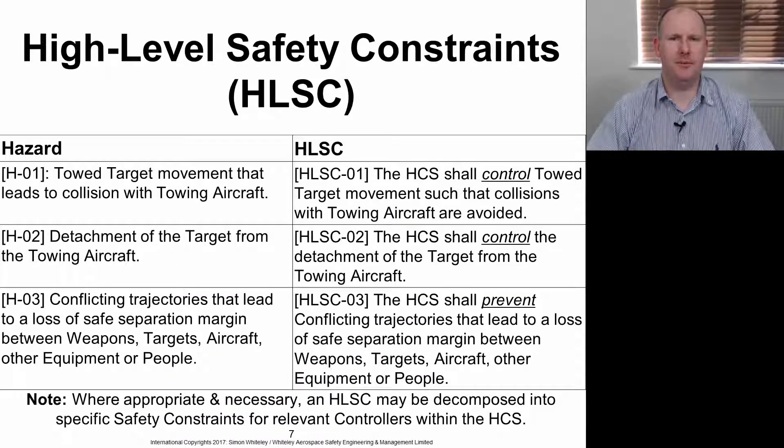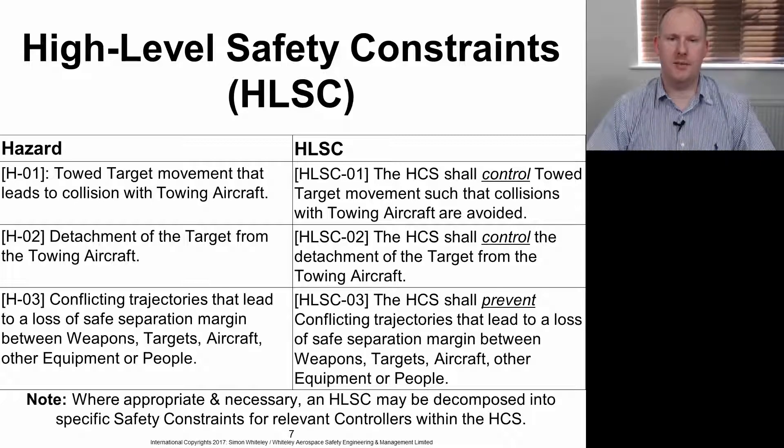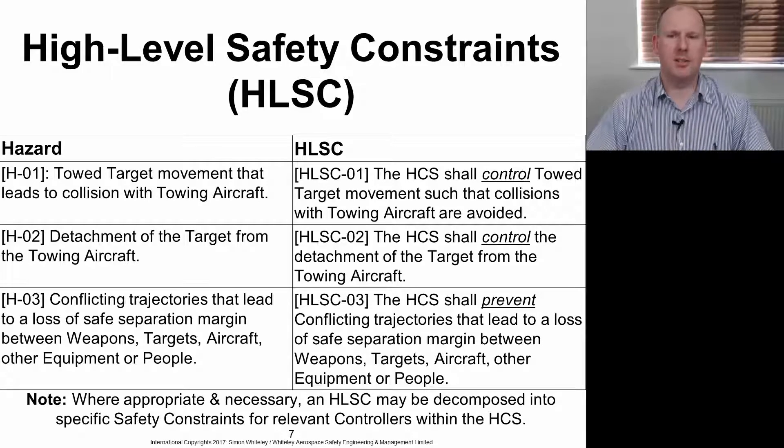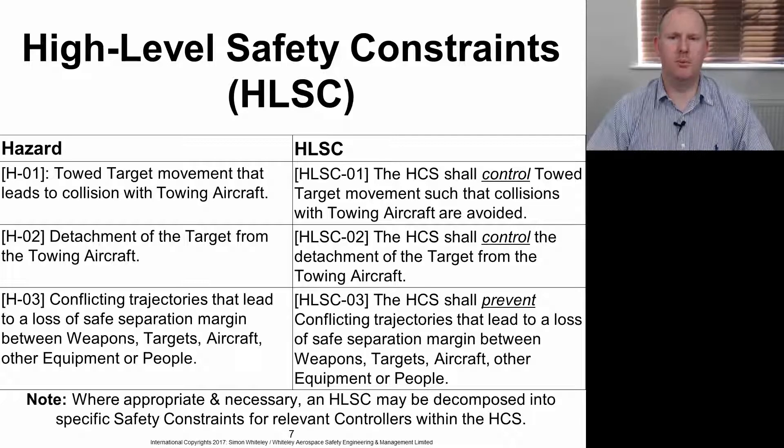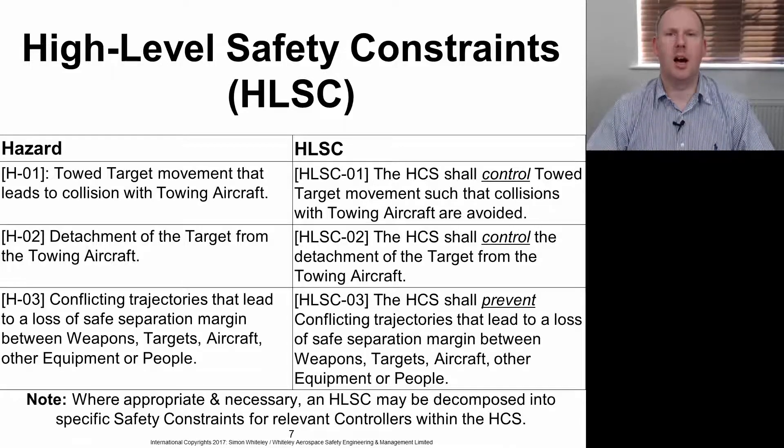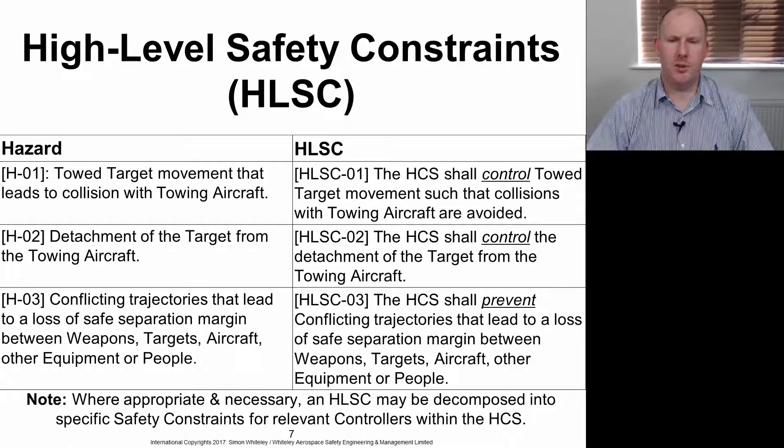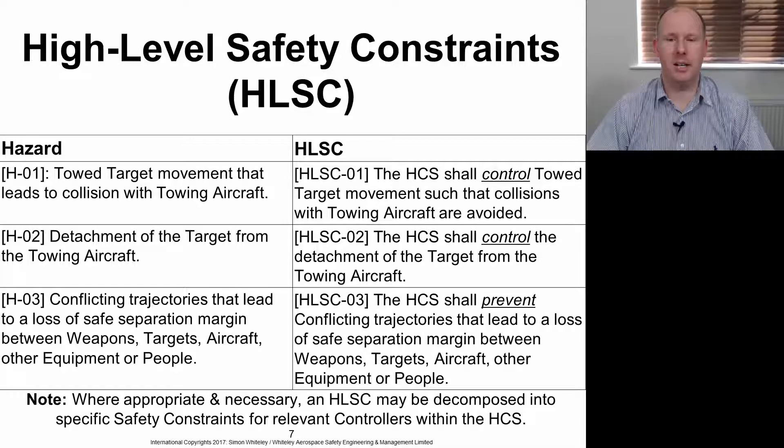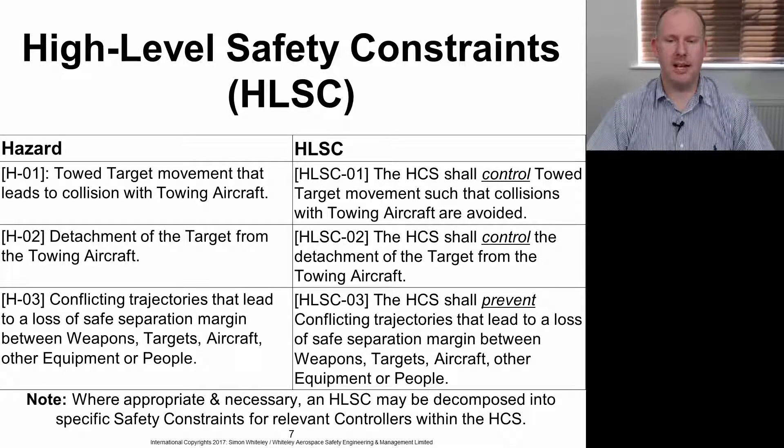So what are the high-level safety constraints associated with these three hazards? High-level safety constraint 01 essentially requires that the hierarchical control structure shall control towed target movement such that collisions with towing aircraft are avoided. High-level safety constraint 02: the hierarchical control structure shall control the detachment of the target from the towing aircraft. And finally, high-level safety constraint 03: the HCS shall prevent conflicting trajectories that lead to a loss of safe separation margin between weapons, targets, aircraft, other equipment, or people.